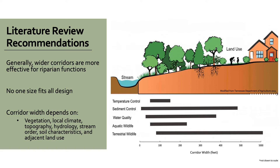The riparian functions I studied were temperature control, sediment control, enhanced water quality, and enhanced diversity in habitat for aquatic and terrestrial wildlife. From the literature review, I found wide variability in optimal riparian corridor width for each function. For example, the optimal width recommended to support terrestrial wildlife ranges from 98 to 5,239 feet, highlighting that there is no one-size-fits-all design. However, a general consensus from the literature indicated that wider corridors are most effective in optimizing riparian functions. When designing riparian corridors, width should depend on vegetation, local climate, topography, hydrology, stream order, soil characteristics, and adjacent land use. Therefore, it is important for local management agencies to assess site conditions to adequately protect riparian ecosystems.